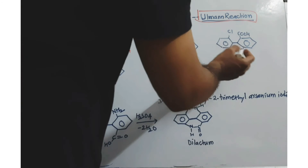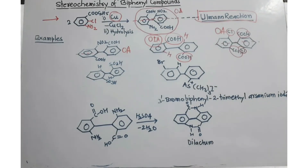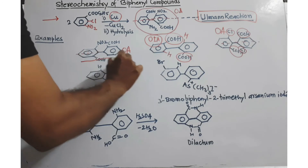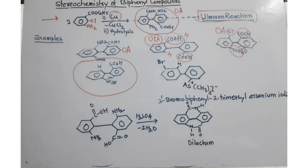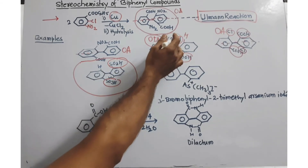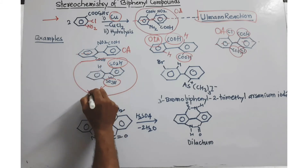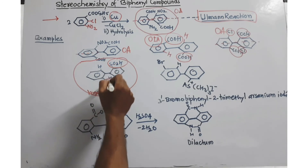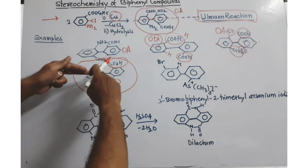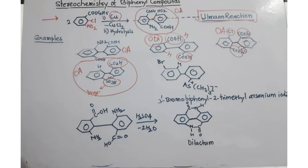In the next example, there are four sufficiently large substituents at the ortho positions. If four substituents are present and there is no plane of symmetry, this compound is optically active. The following example is a very interesting and typical one to remember. There are just two substituents, but the SO₃H sulfonic acid group is a very large group. Because of this, even with just two substituents, the rotation between the two rings is restricted and the compound becomes optically active.